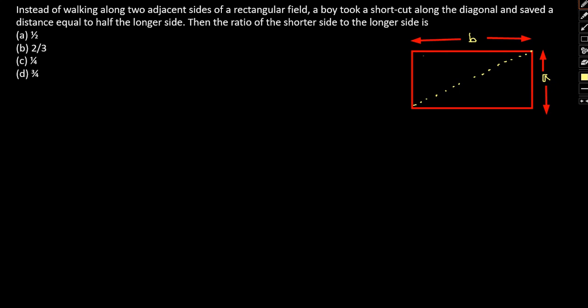And the distance he actually saved - having let longer side be B and shorter side be A - so A plus B minus the diagonal will be the saved distance. So diagonal will be square root of A square plus B square. So that is equal to half the longer side.